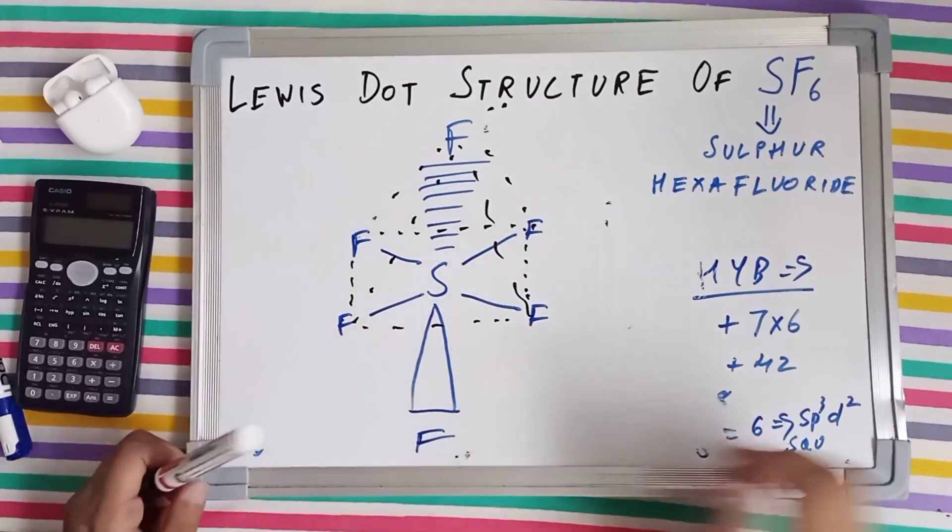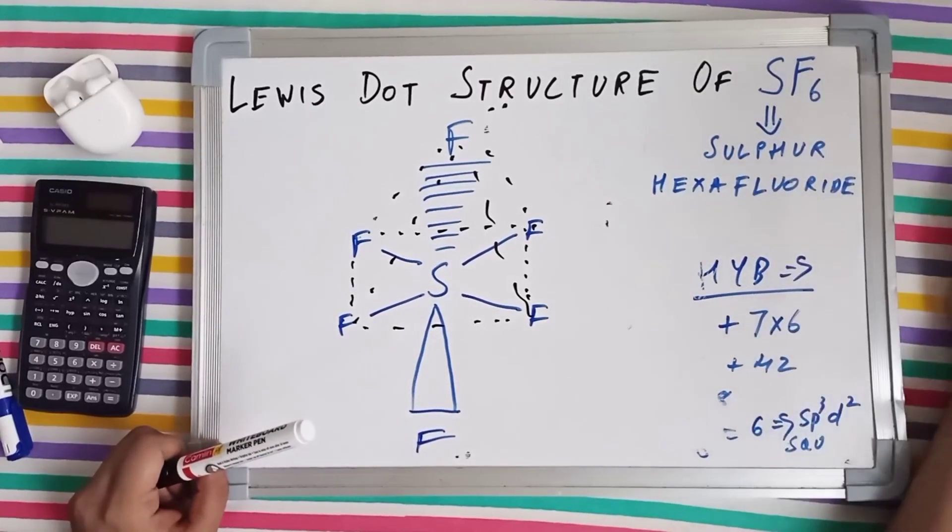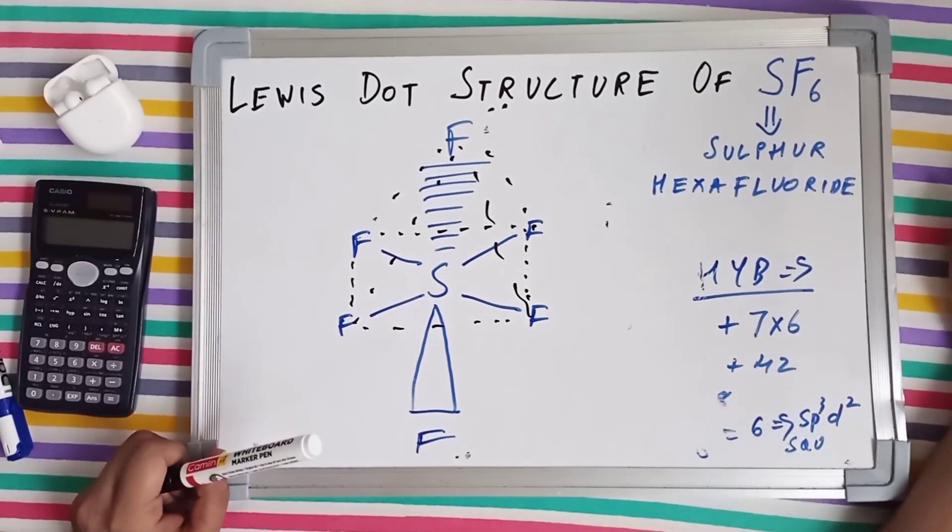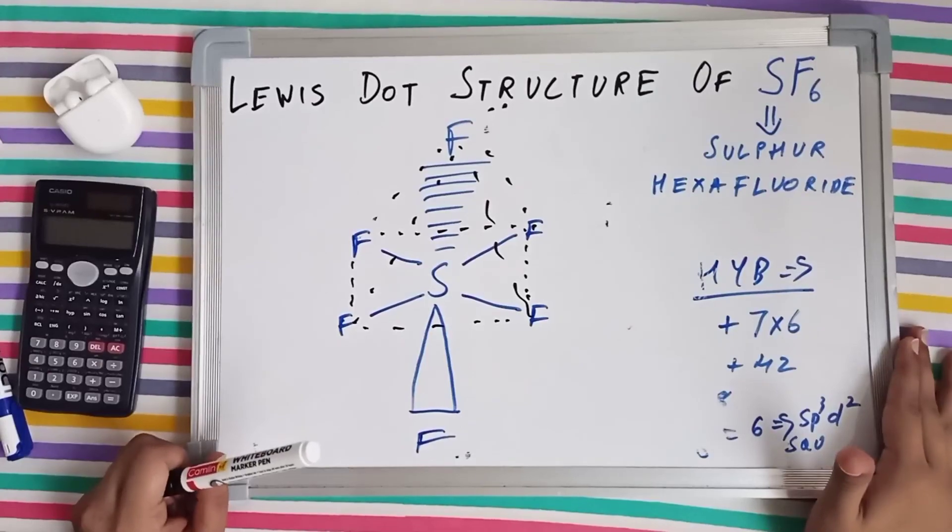So this was all about the Lewis dot structure and its hybridization of SF₆. Thank you for watching and I'll see you guys in the next video.